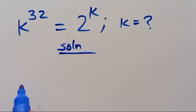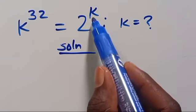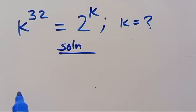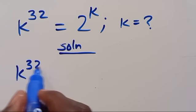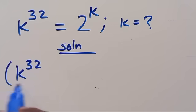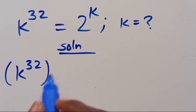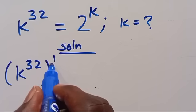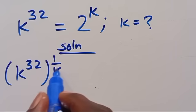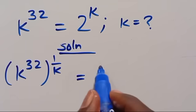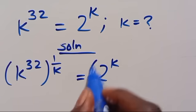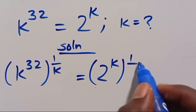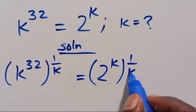So from here, let's try to eliminate this K by taking the power of both sides by 1 divided by K. So here will be K to the power of 32, then in parentheses, to the power of 1 divided by K equals 2 to the power of K, then in parentheses to the power of 1 divided by K.